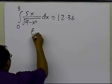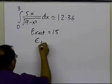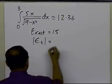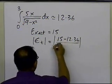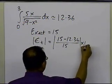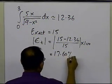Of course, we know the exact value is 15, so the absolute relative true error in this case turns out to be exact value minus approximate value divided by exact value times 100, and this number here turns out to be 17.60%.